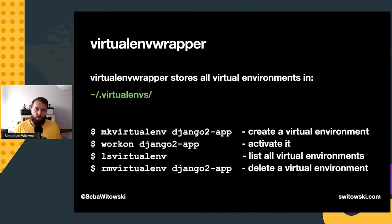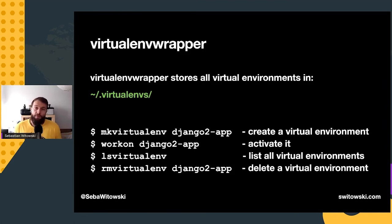To activate a virtual environment with virtualenvwrapper, you just call `workon` and the name of the environment — for example, `workon django3app`. You don't have to type the whole path to the activation script; virtualenvwrapper figures out which script to use based on the environment name. If you forget the name of the virtual environment, you can just run `lsvirtualenv` to get a list of all existing environments. With plain venv it's impossible to get such a list because venv doesn't store this information centrally. To remove a virtual environment, you just call `rmvirtualenv` and the name.